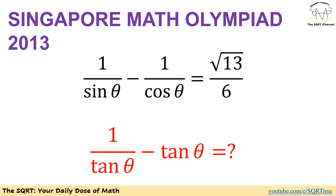In this problem, we have 1 over sine of theta minus 1 over cosine of theta equals to sqrt(13) over 6. We are going to find what we have for 1 over tan of theta minus tan of theta.